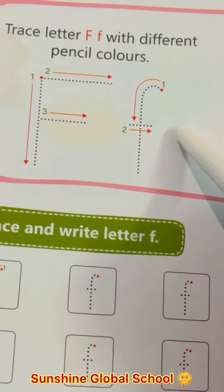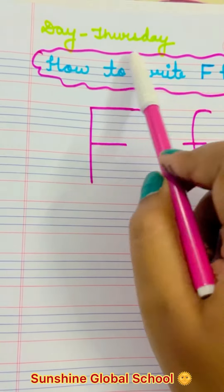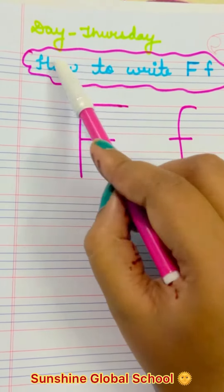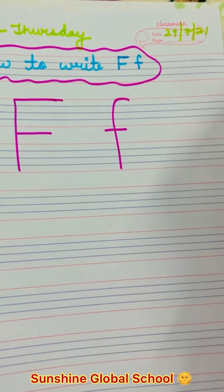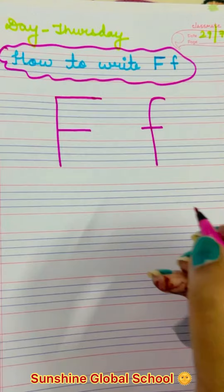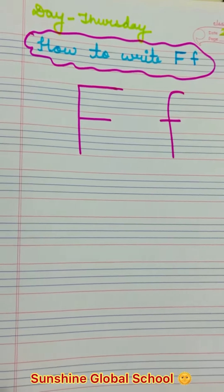So let's start. Okay, but before that you have to tell me what is the day today. Yes, today is Thursday and the day is 29th July 2021. So let's start, how to write letter F.